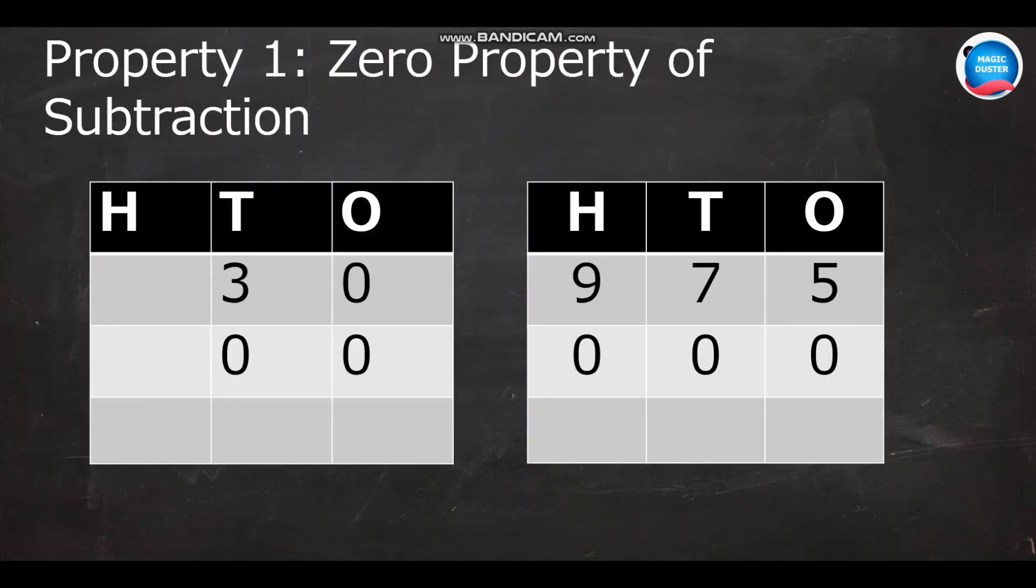Property one: zero property of subtraction. Here we have two examples. Let us solve one by one. Thirty minus zero. When we are going to do any operation, we should start with the ones place. So, if I start in the ones place, zero minus zero is zero and three minus zero is three. So, the number is thirty.